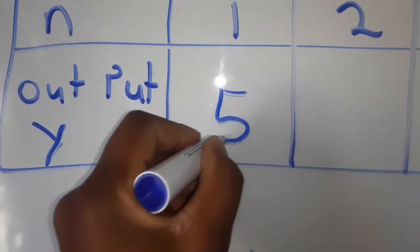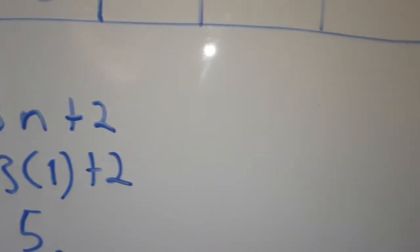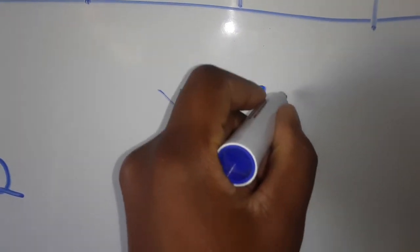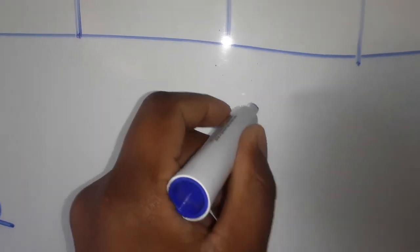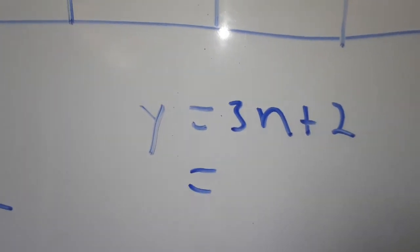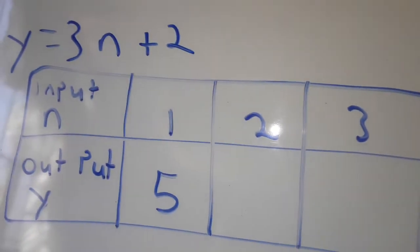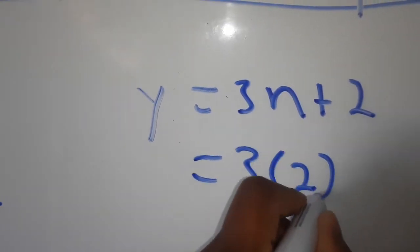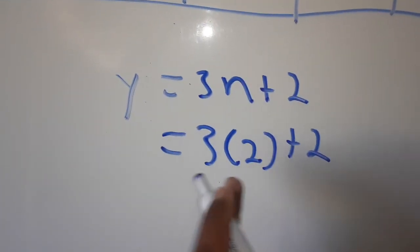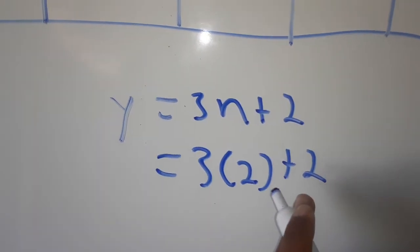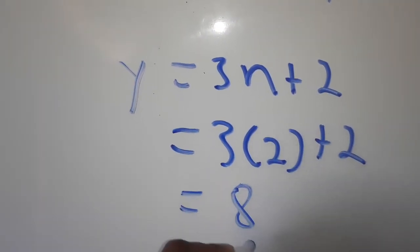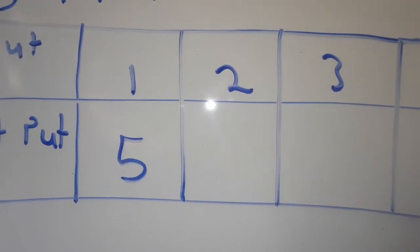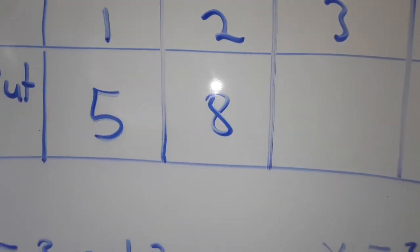Then we'll say y is equal to 3n plus 2, which is going to be equal to 3. We put the second input, which is 2. In place of n we place 2, plus 2. 3 times 2 is 6, plus 2 is 8. So our answer is 8. So 8 is our second output.